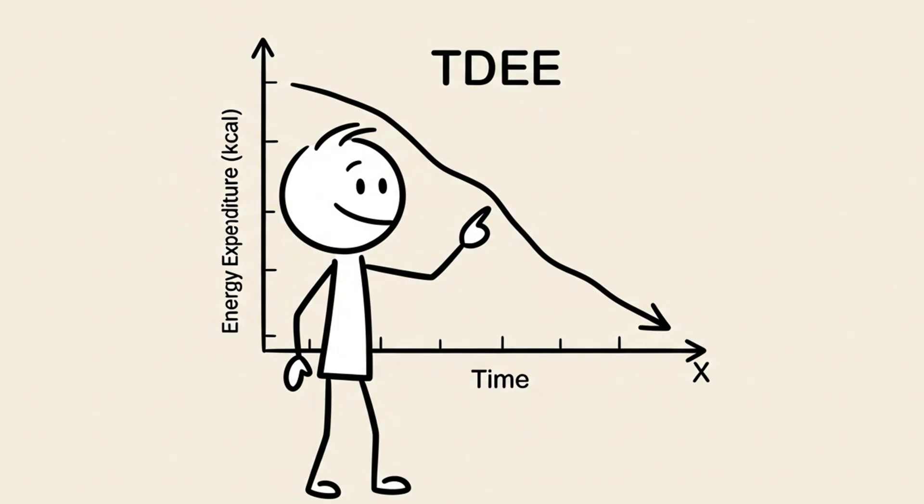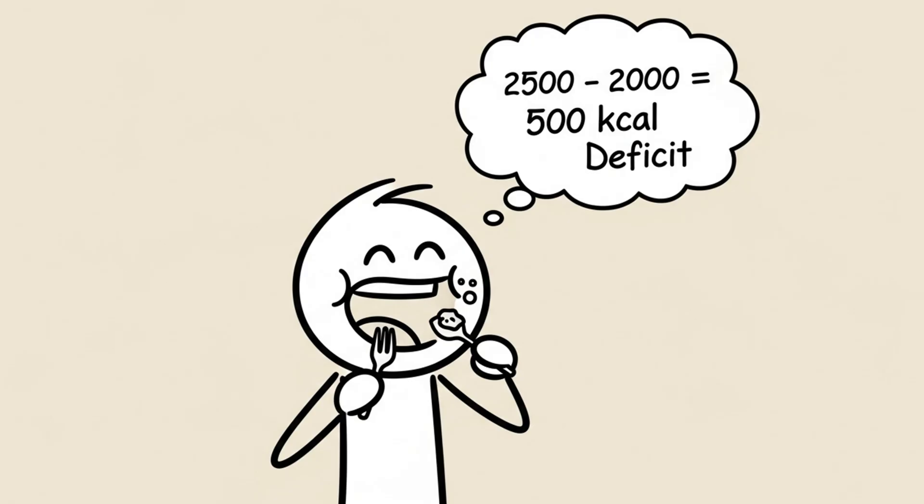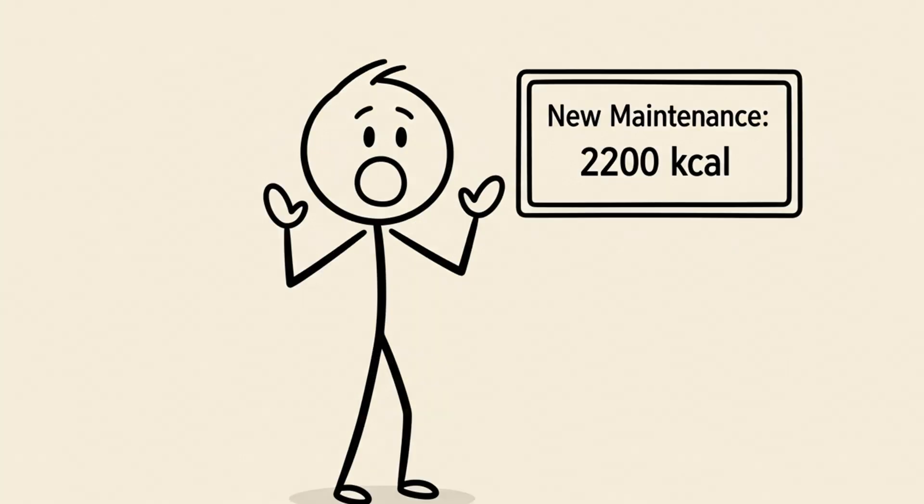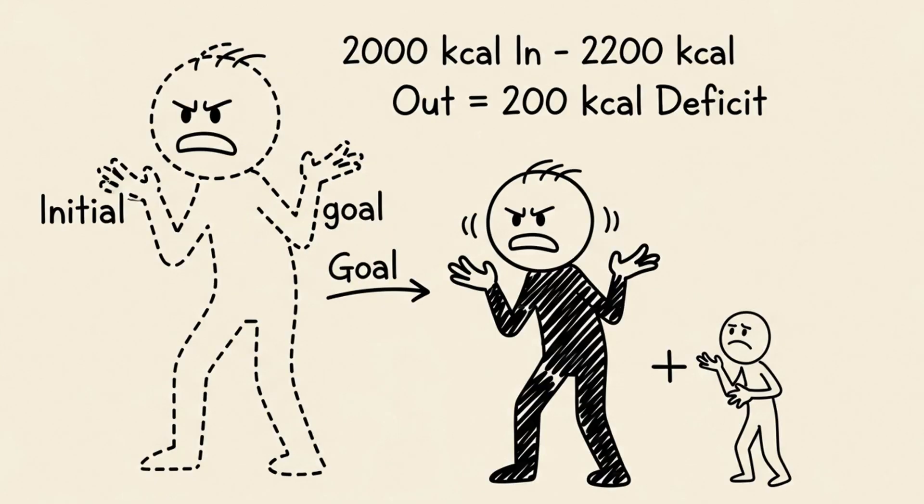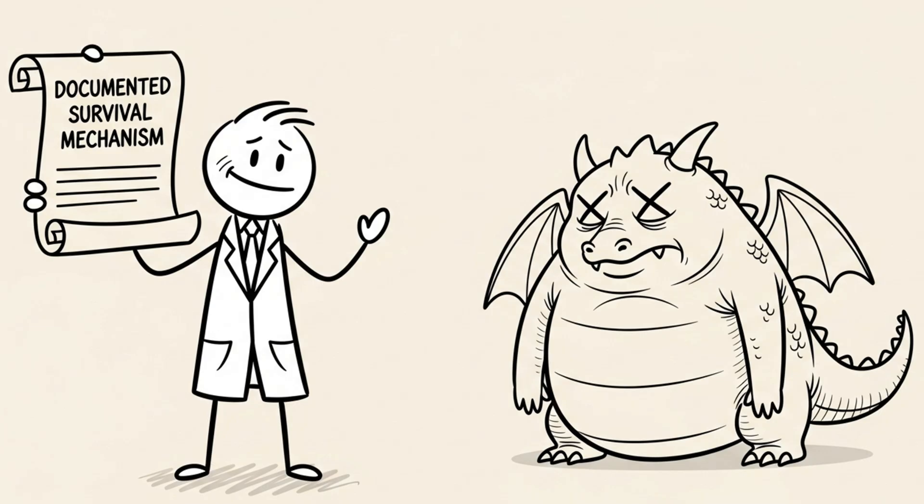The result? Your TDEE, your total daily energy expenditure, drops. When you started, your maintenance might have been 2,500 calories. So, you ate 2,000 to lose weight. But after three months of dieting, your body has adapted. Your new maintenance is only 2,200 calories. Now, your 2,000-calorie diet is only a 200-calorie deficit. Fat loss slows to an absolute crawl. This isn't a myth. It's a documented survival mechanism.